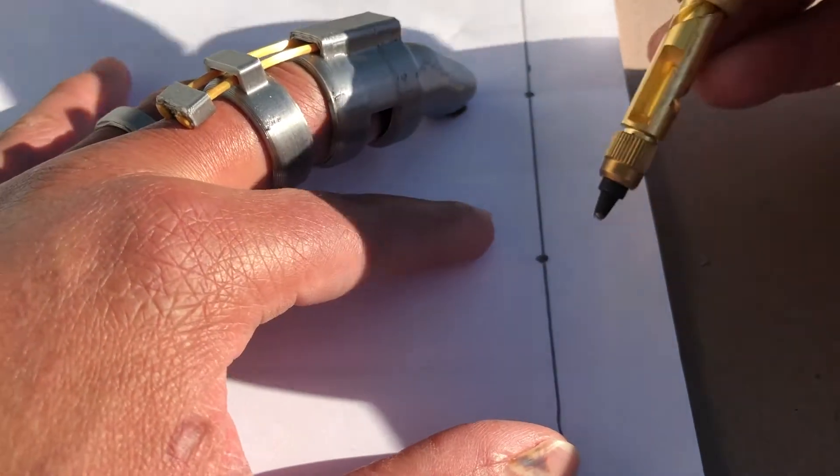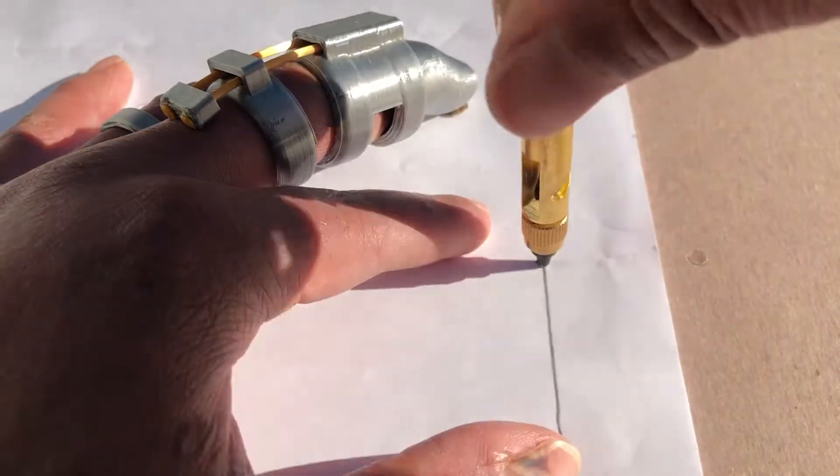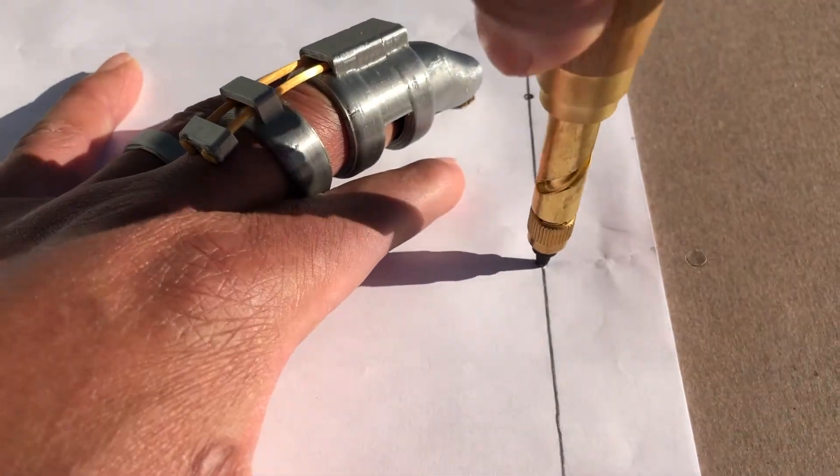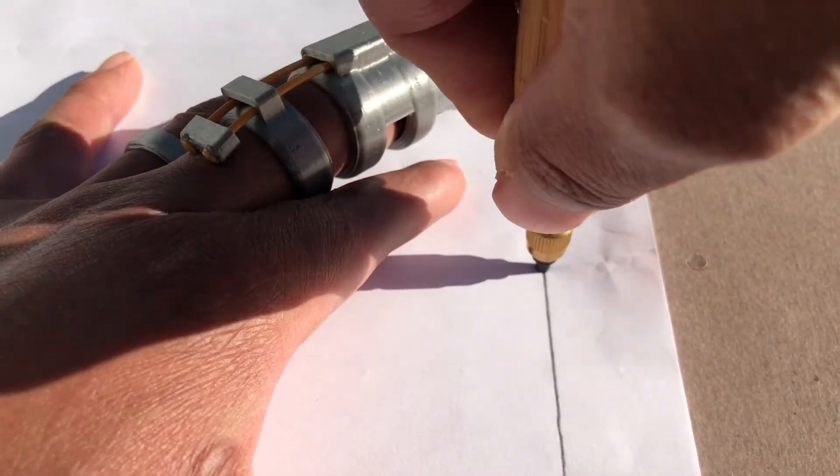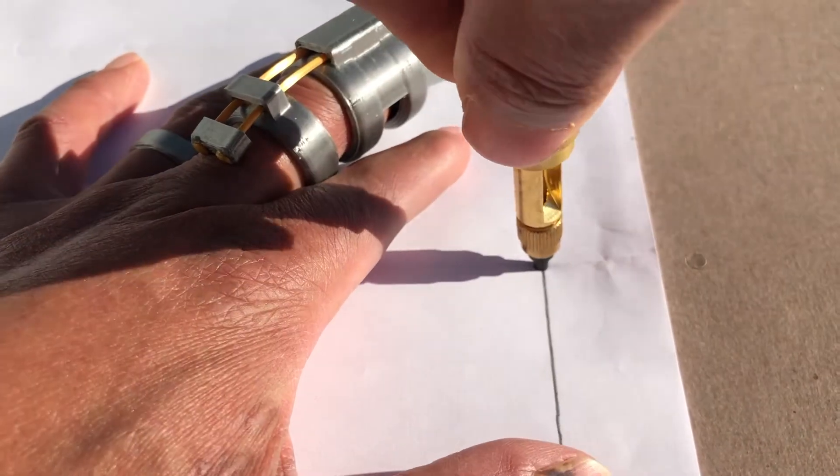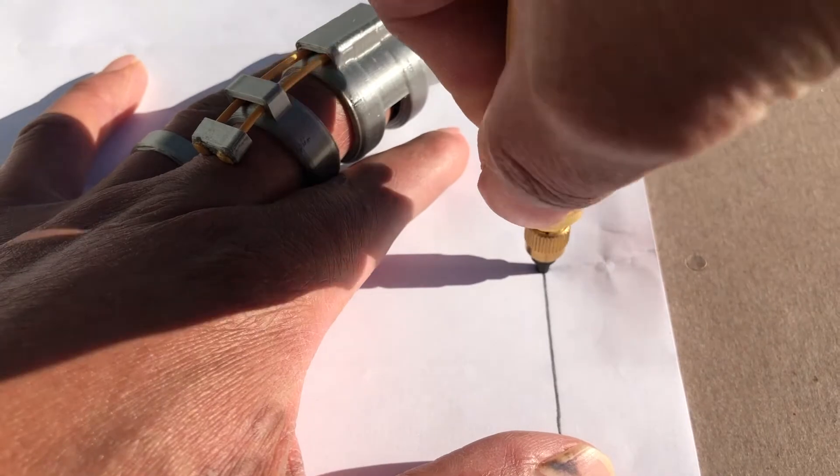So the first thing you want to do is line up your hole punch. Make sure you keep pressure on it. Don't try to go too fast because you will skip and jump and mess up your hole.